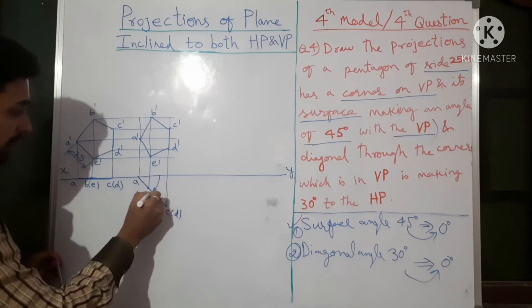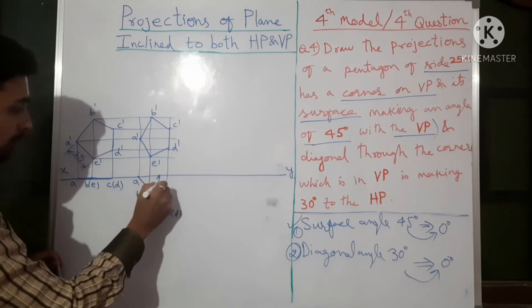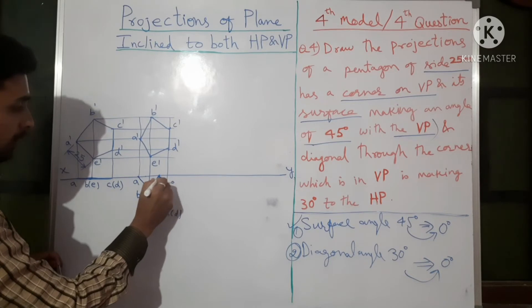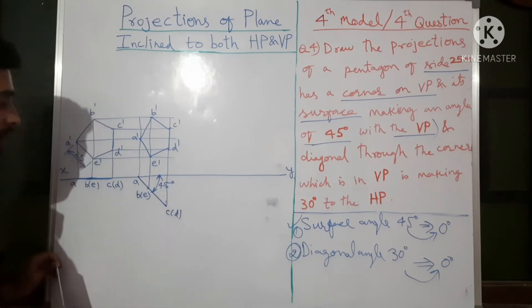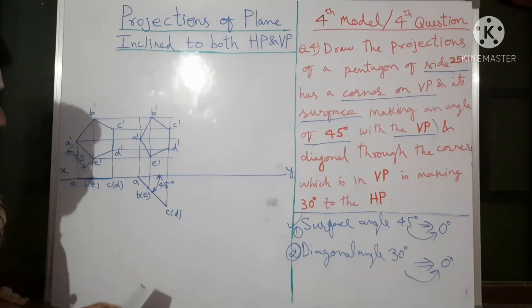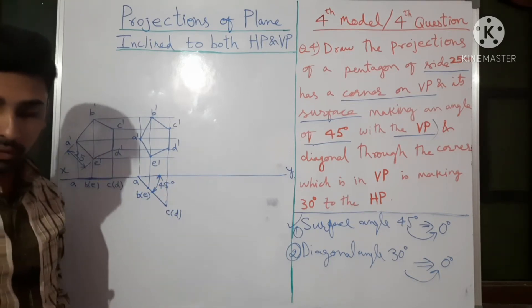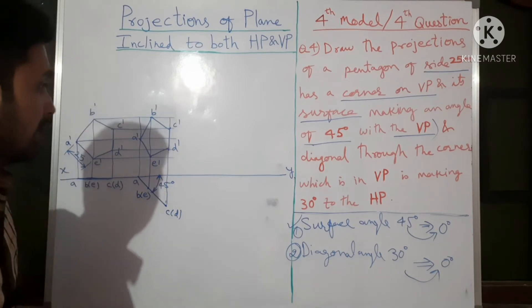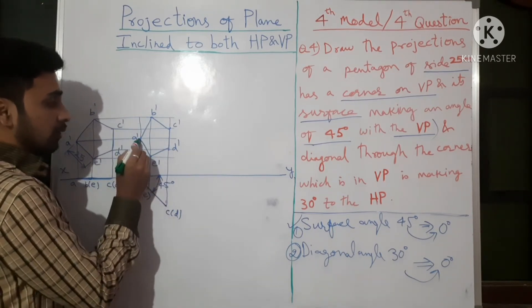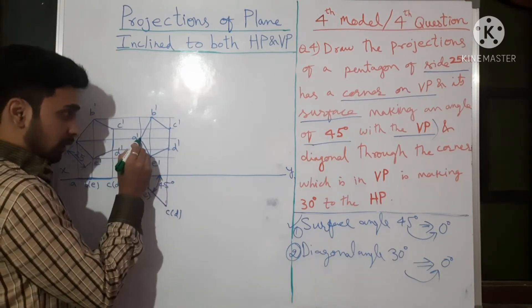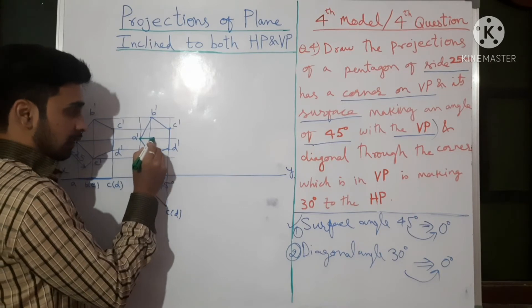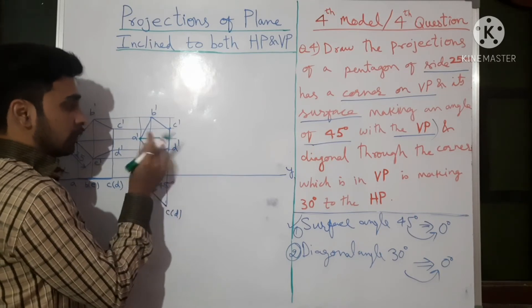From the projections: A gives A-dash, B gives B-dash, then C-dash, D-dash, E-dash — join all these points. This is the second step, where the surface is inclined to VP with corner A in VP. In the top view, one line is at 45 degrees. Mention the 45-degree angle here. This is how the second step is completed.